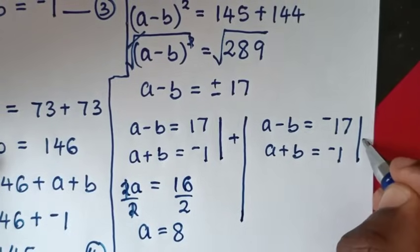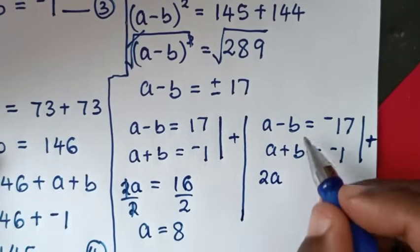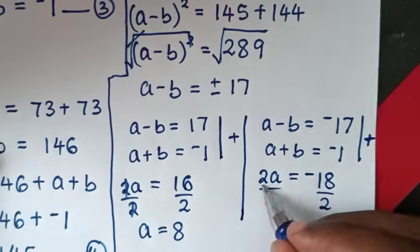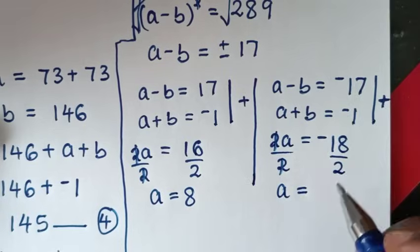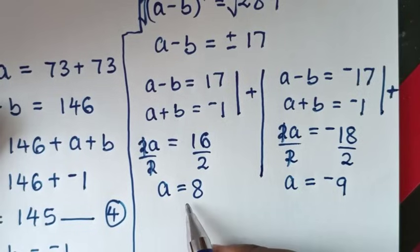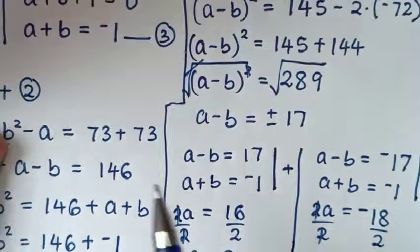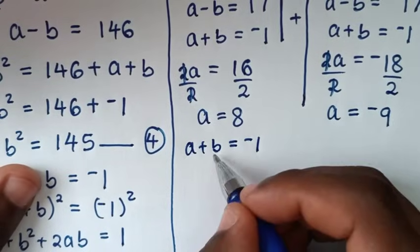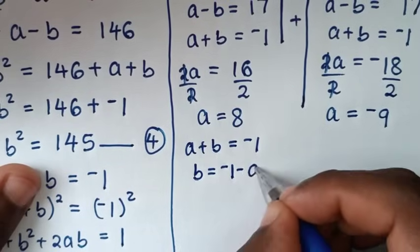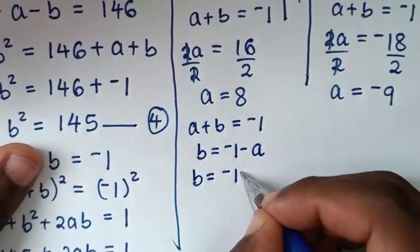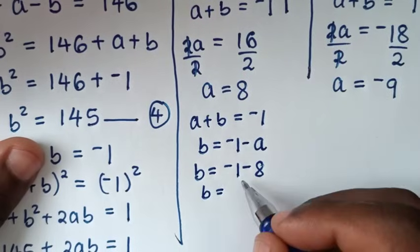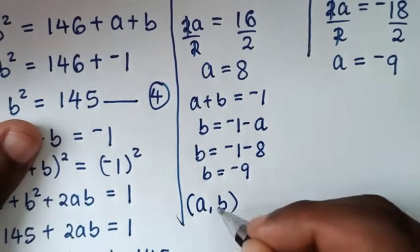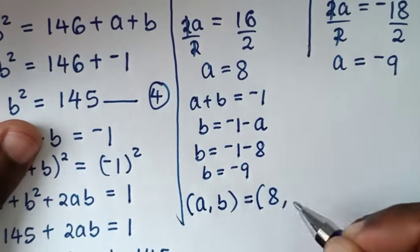From the second solution, a minus b equals negative 17, and a plus b equals negative 1. Adding these two equations: 2a equals negative 17 plus negative 1, which is negative 18. Dividing by 2 gives a equals negative 9. Now to get the values of b, we use equation 3: a plus b equals negative 1, so b equals negative 1 minus a. Since a is 8, b equals negative 1 minus 8, which is negative 9. So the first solution is a comma b equals 8 comma negative 9.